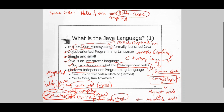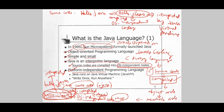The hello.class file, which we call OS independent code, is then interpreted by the Java Virtual Machine installed in any computer on any platform. Java code runs on the Java VM — the Java Virtual Machine — installed in any computer. We also call Java a language that allows a developer to write once and run anywhere.